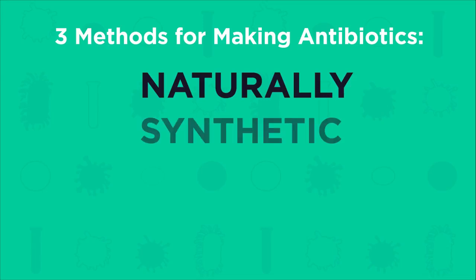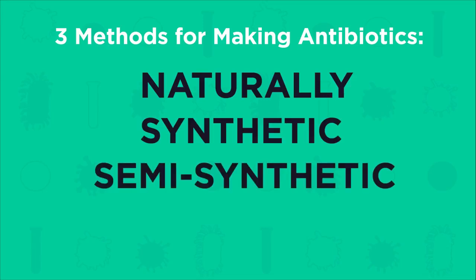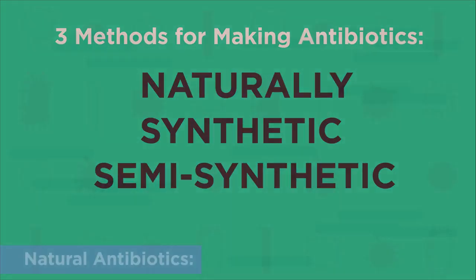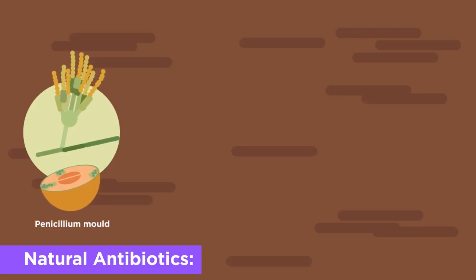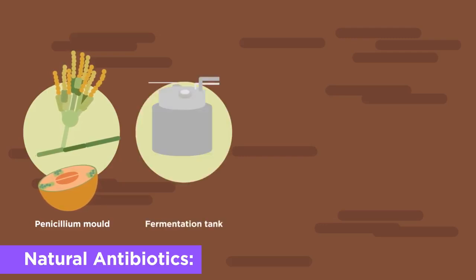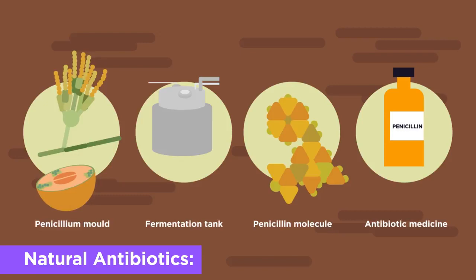Naturally, synthetic, and semi-synthetic. Natural antibiotics are made by other organisms, such as fungi and other bacteria, like Fleming discovered. They are grown in huge colonies where the active substance is then extracted.